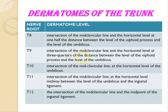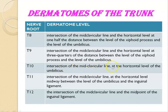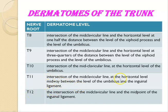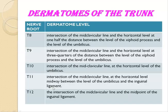T9 is at the intersection of the midclavicular line at approximately three quarters of the distance between the xiphoid process and the umbilicus. T10 is exactly at the level of the umbilicus. T11 is at the intersection of the midclavicular line at the horizontal level between the umbilicus and the inguinal ligament. T12 is at the midpoint of the inguinal ligament.